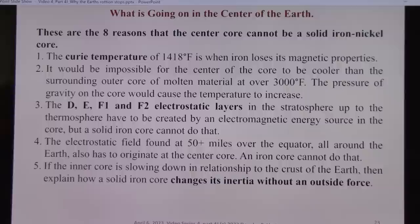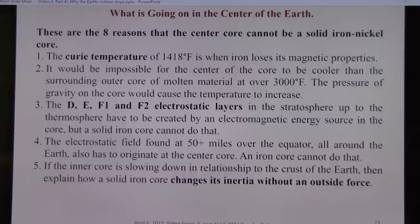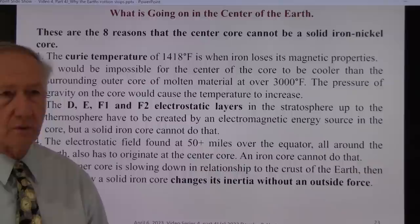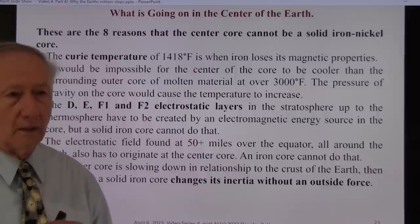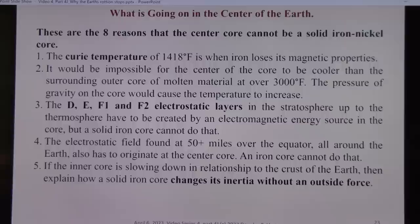These are the eight reasons the center core cannot be a solid iron core. I do not know and understand how they could still think that or teach it. These are the eight reasons. One, the Curie temperature of 1418 degrees is when iron loses its magnetic properties. In other words, its atoms become disassociated, not in a crystal form, and they wind up being random. Kinetically, they're moving around too much, so they lose the ability to be a magnet.